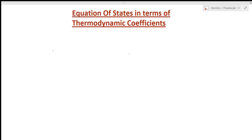Hi students, welcome to chemistry class. I am Priyanka Jain and you are watching videos on thermodynamics. In our last lectures we studied thermodynamic coefficients, and now we will study the relationship of thermodynamic coefficients with different terms. We will see the equation of states in terms of thermodynamic coefficients, how we can correlate alpha, beta, and gamma, and how we can express entropy in terms of thermodynamic coefficients.